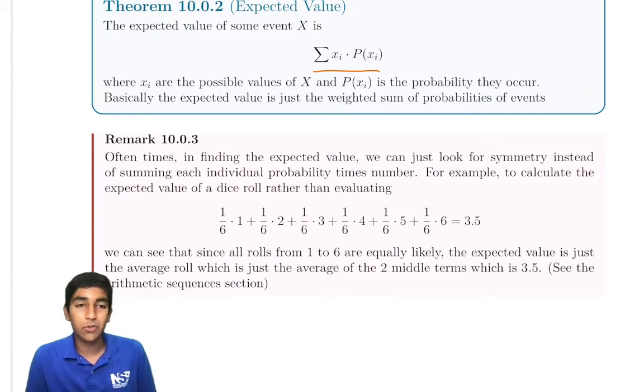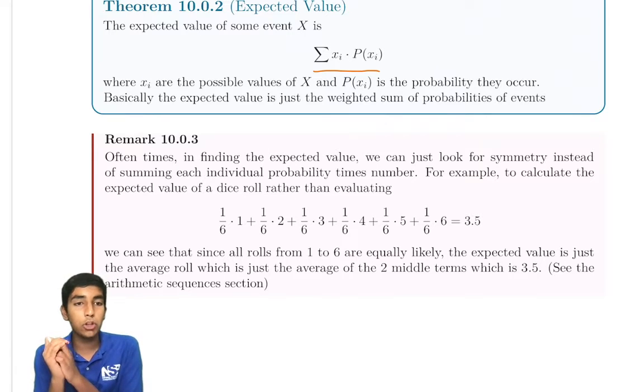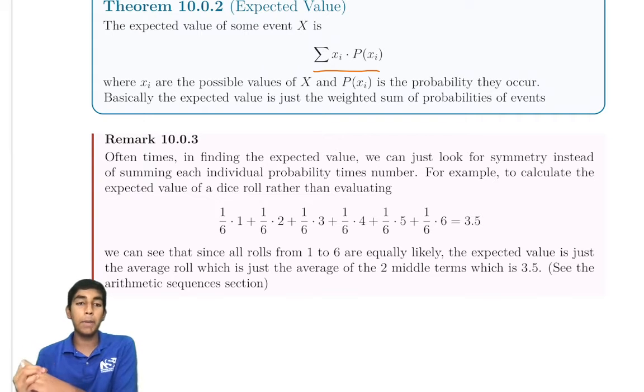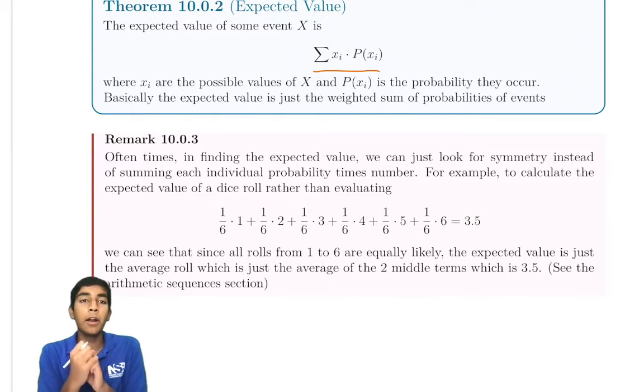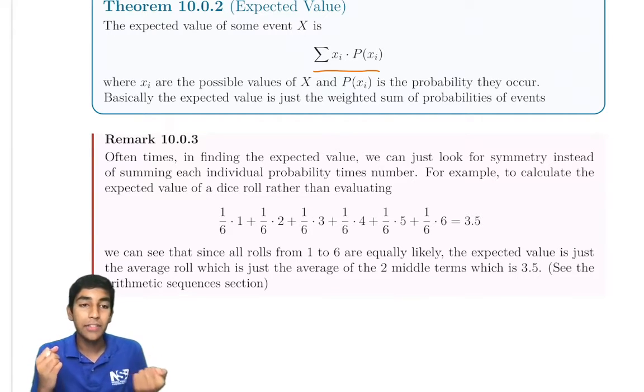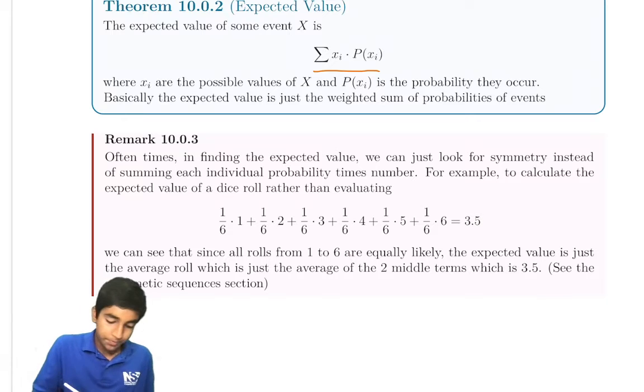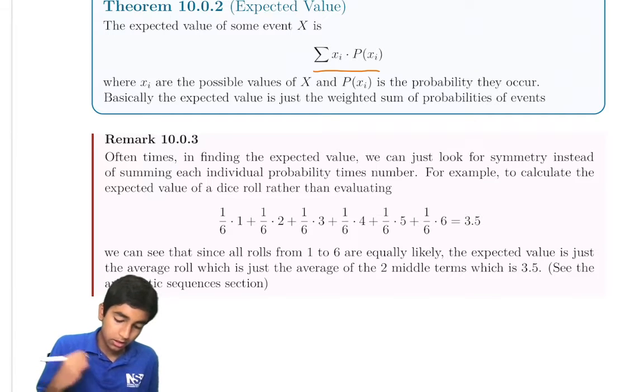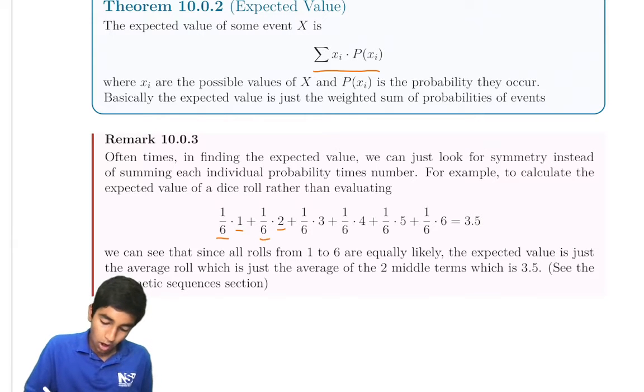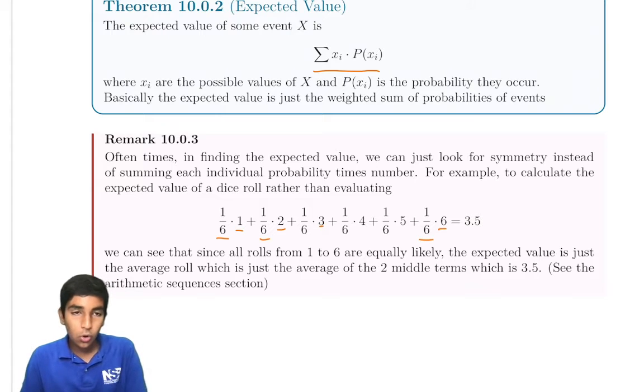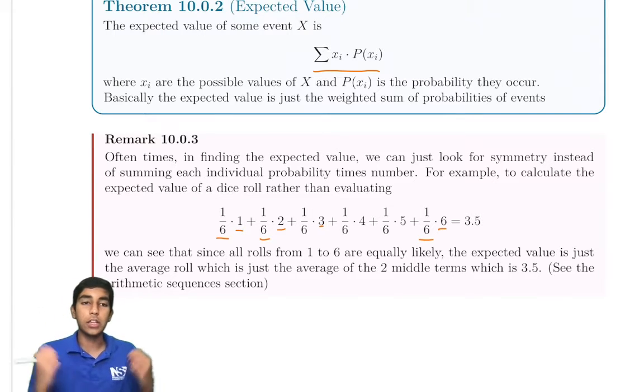What's the expected value of a dice roll? This is a good example to start with. What we do is multiply the probability of an event happening times whatever number is associated with that event. In this case, the dice roll, because we're trying to find the expected value of that dice roll. So probability of rolling one is a sixth, probability of rolling a two is another sixth, and so on all the way until six is a sixth. The expected value is just the sum of all of these.